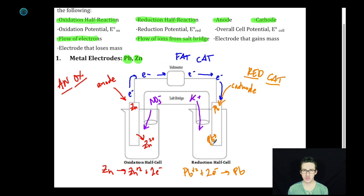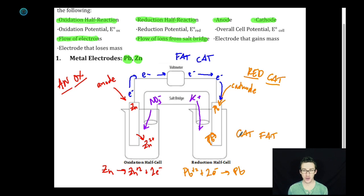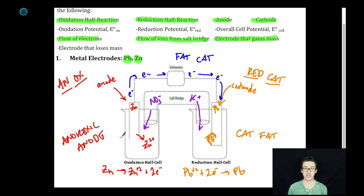The electrode that's going to gain mass is going to be our cathode. As those lead ions plate onto the cathode, it's going to grow in mass. Remember: cat fat — my cathode's going to get fat. Electrode that gains mass: check. Our anode is going to look like it's dissolving away — it's going to lose mass. Remember: anorexic anode — it's going to lose mass. Electrode that loses mass: check.